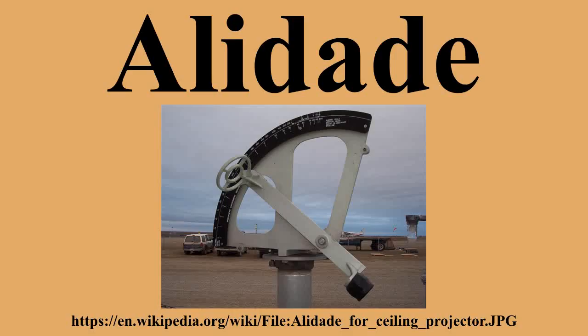The earliest alidades consisted of a bar, rod, or similar component with a vane on each end. Each vane has a hole, slot, or other indicator through which one can view a distant object. There may also be pointers on the alidade to indicate a position on a scale. Alidades have been made of wood, ivory, brass, and other materials.